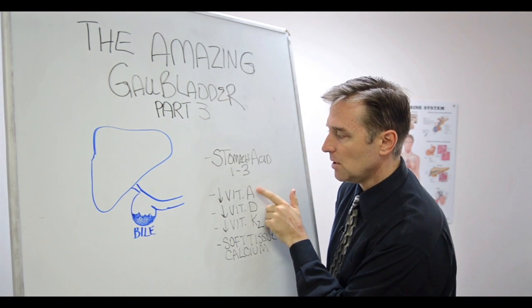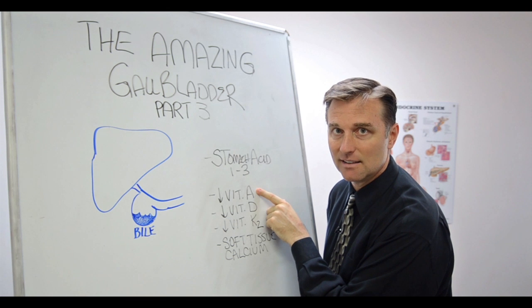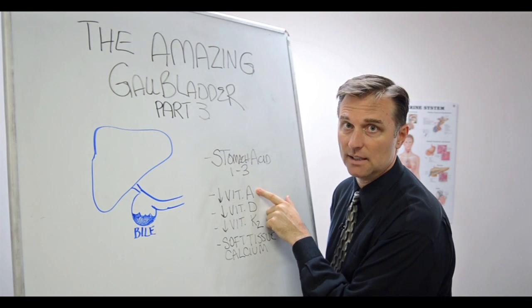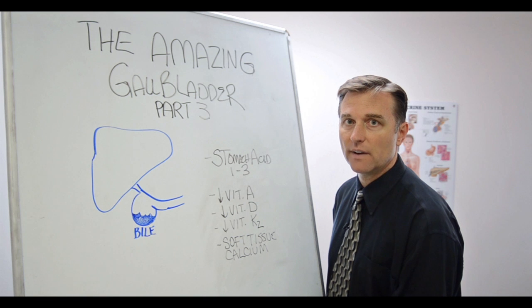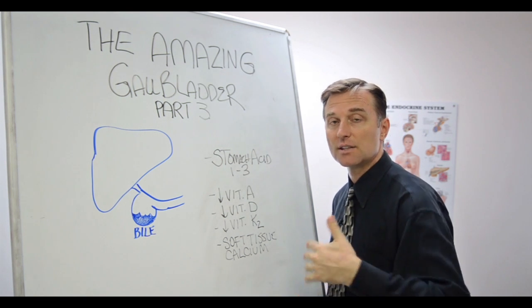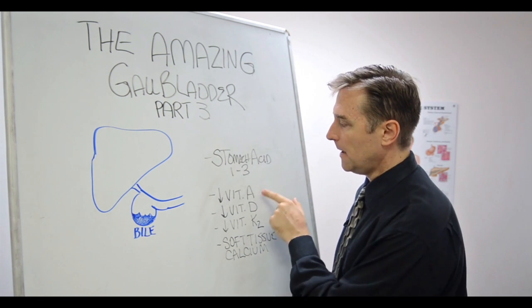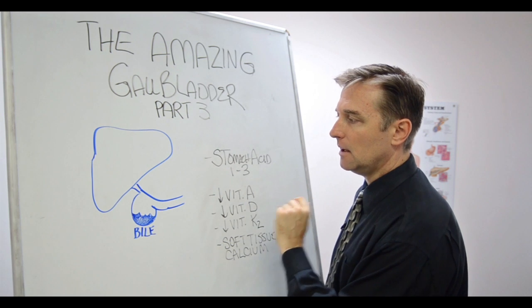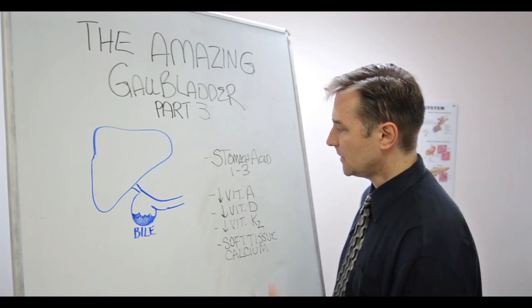Okay, so we have vitamin A. Also, if you're low in vitamin A, you're going to get acne. I mean, take a look at Accutane. What is Accutane? That's for acne. What is it? It's concentrated vitamin A, but it's in a toxic amount. And that's why there's a lot of side effects. So if you have enough vitamin A because you don't have enough bile, you probably are not going to get acne.